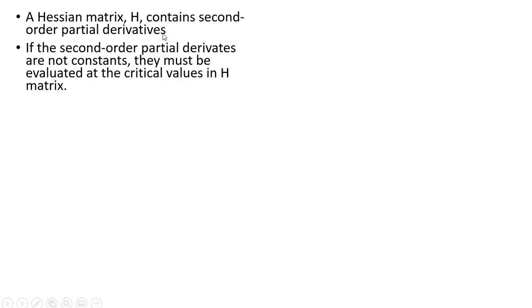A Hessian matrix contains second order partial derivatives, and if the second order partial derivatives are not constants, they must be evaluated at the critical values in the Hessian matrix.